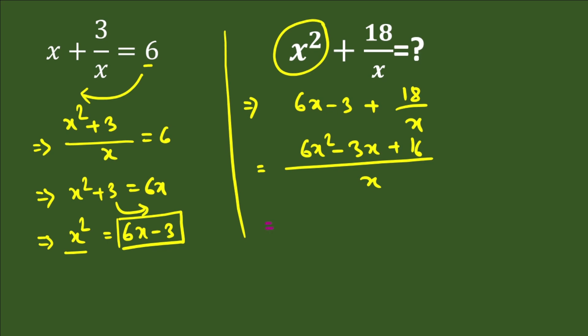So it is 6 multiplied by, in place of x squared, 6x minus 3, and here it is negative 3x plus 18, and that is divided by x.